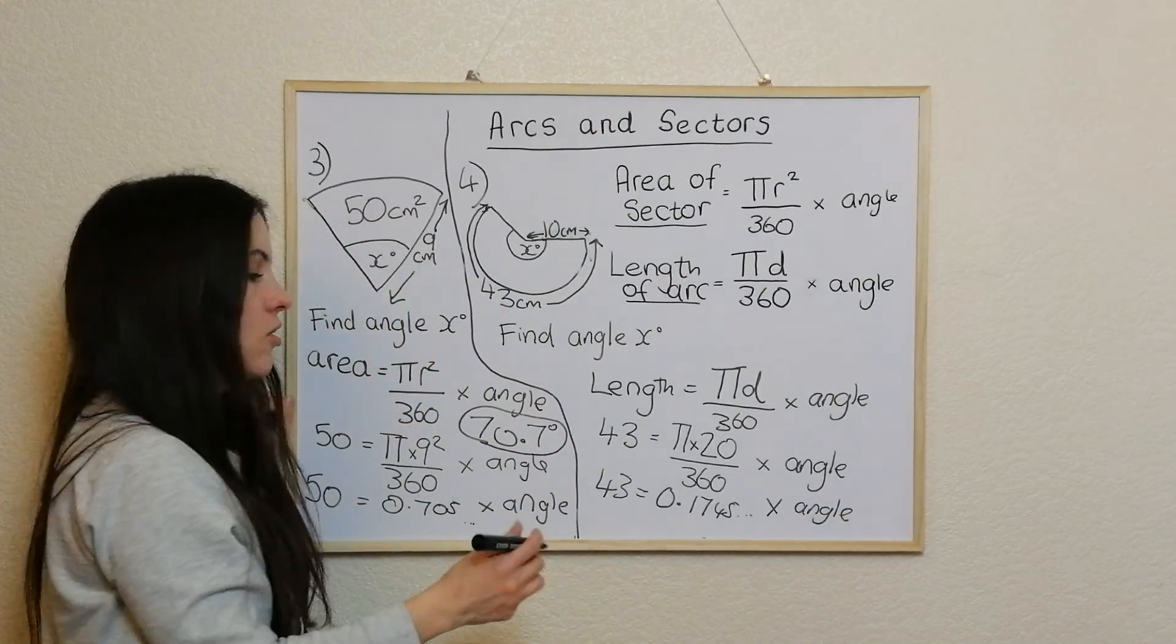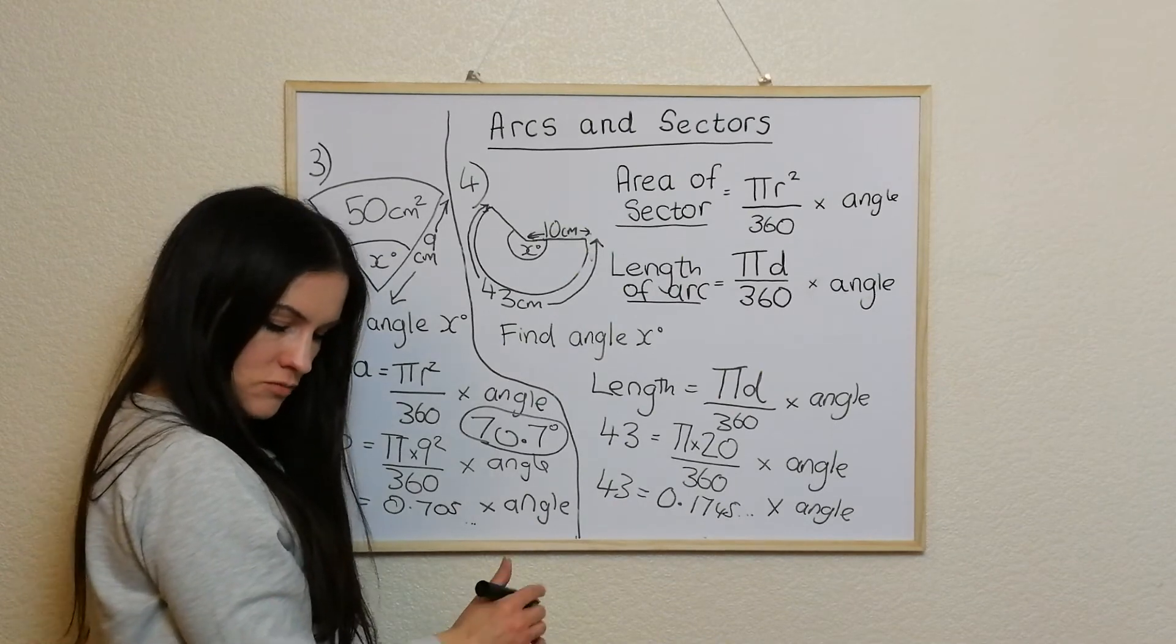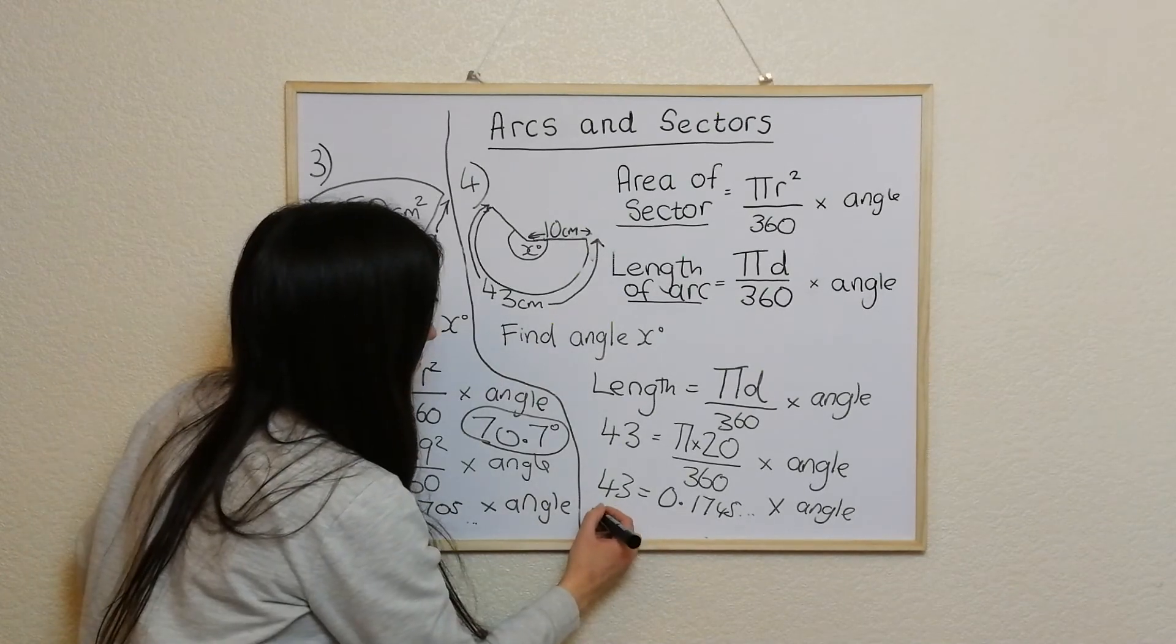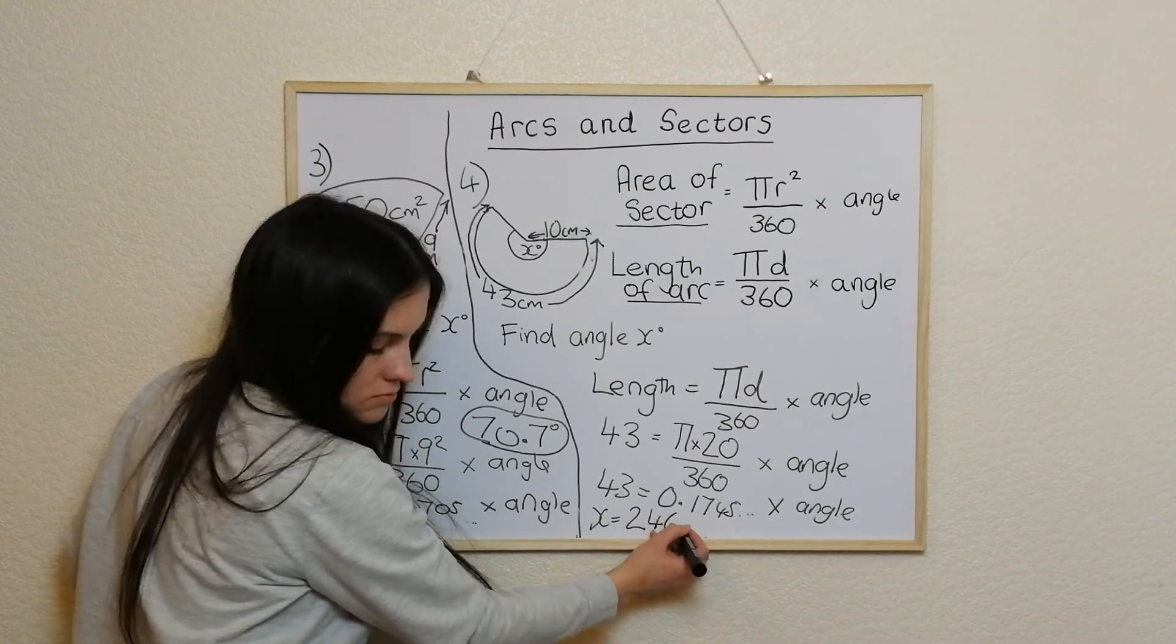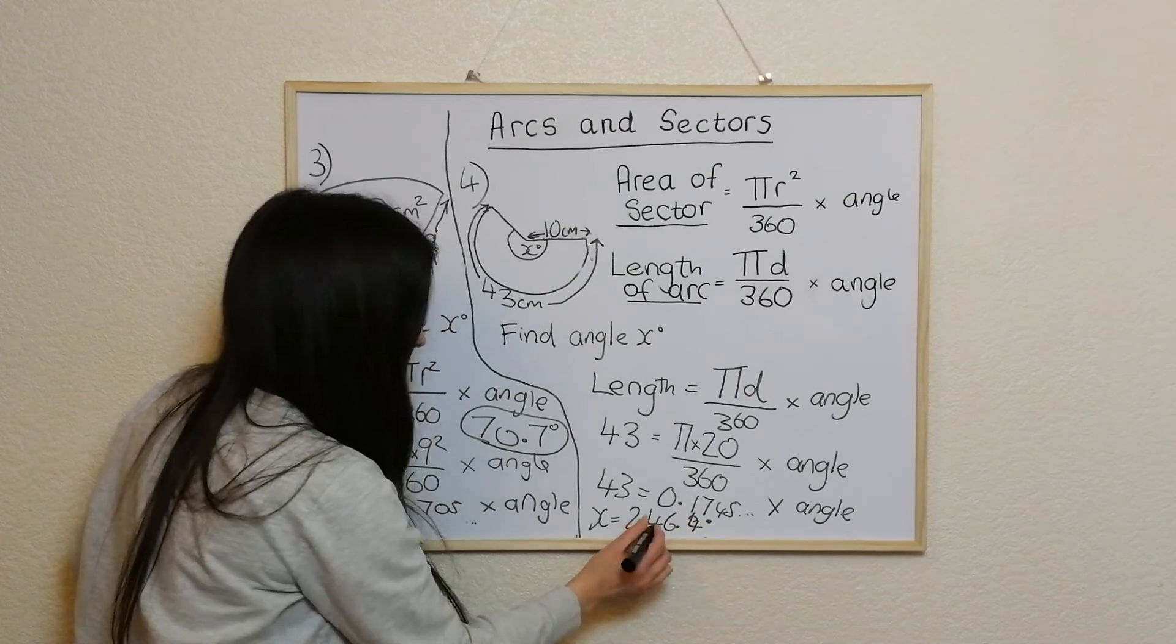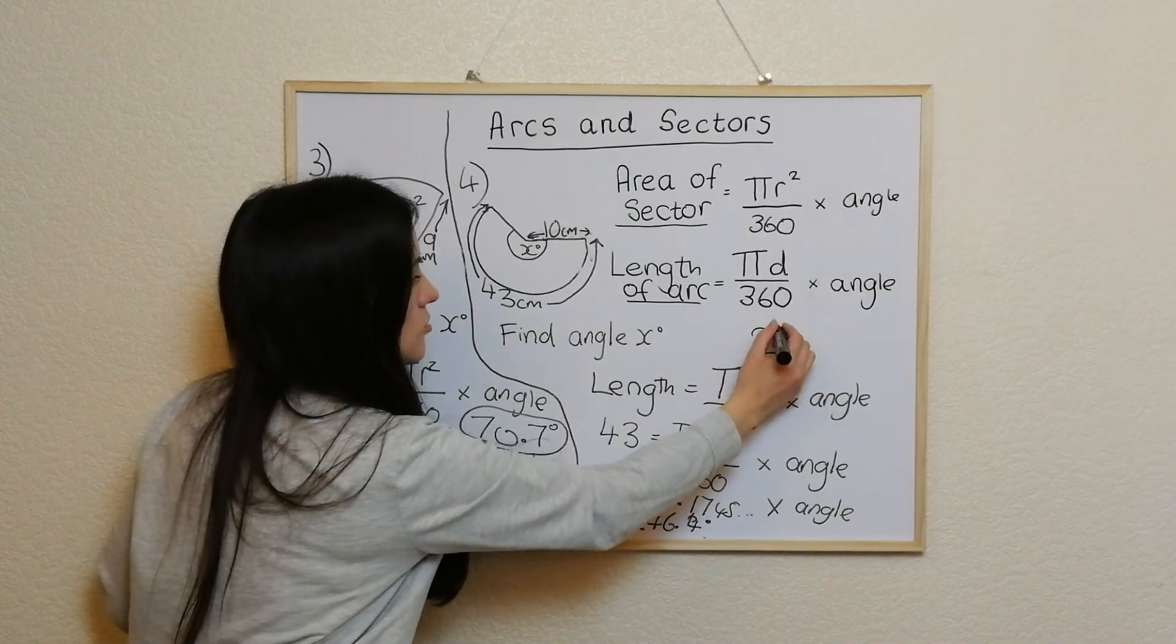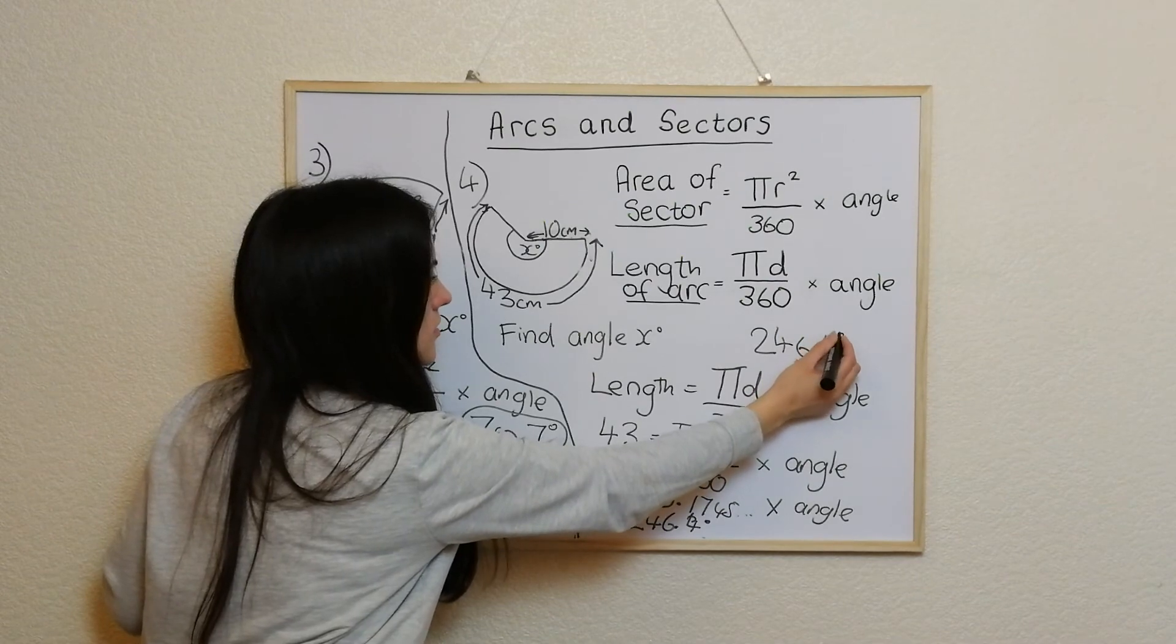And to get the angle, all I do is 43 divided by this bit here, which gives me the answer of 246.4 degrees. So I'll maybe write it up here, 246.4 degrees. So this is the answer to this one here.